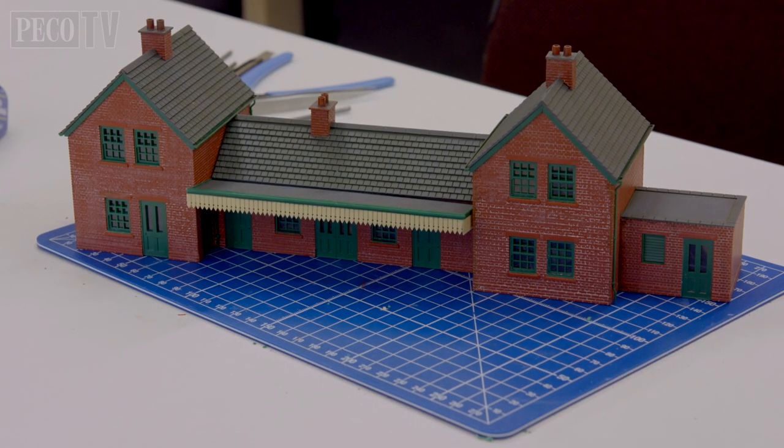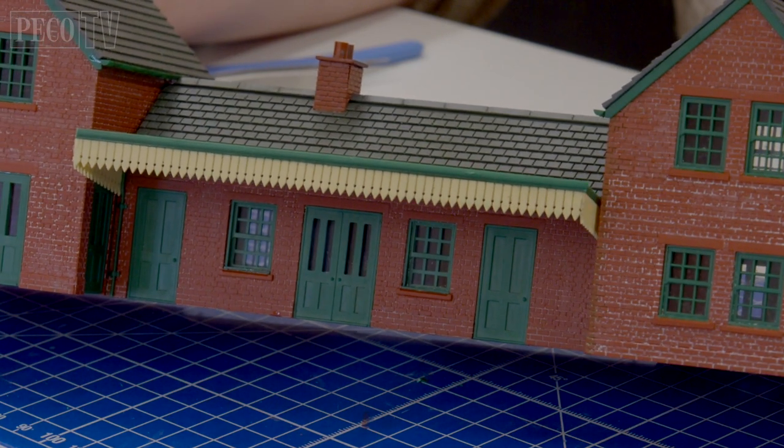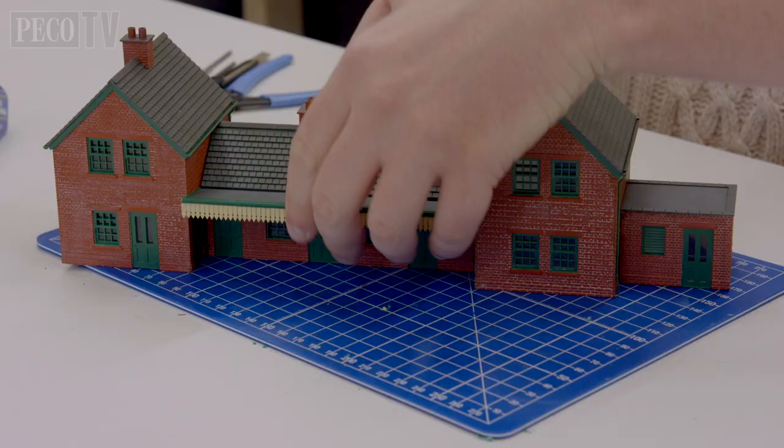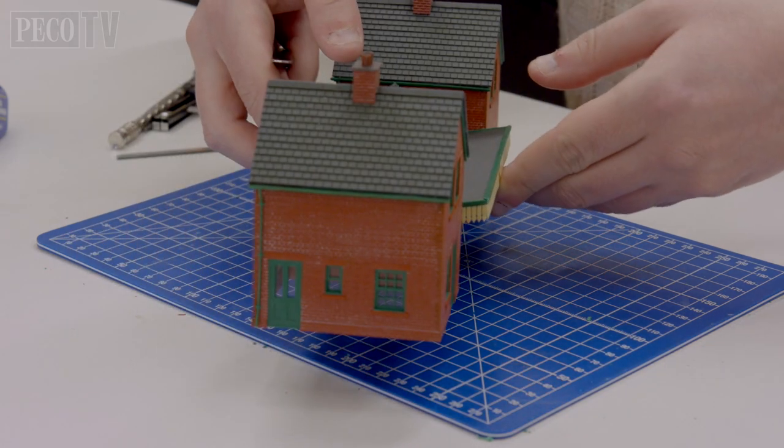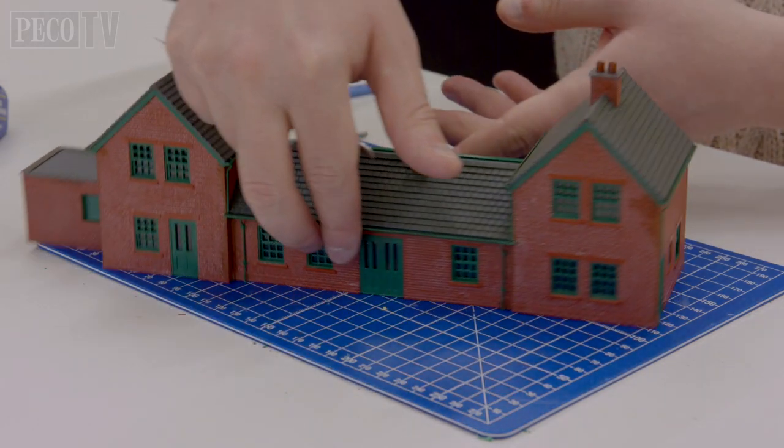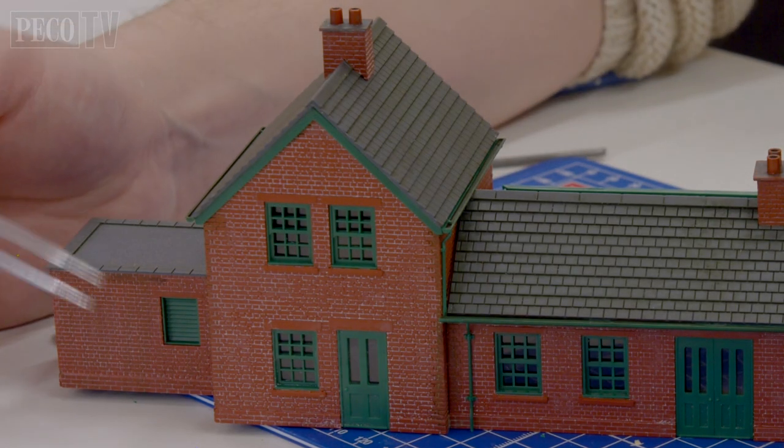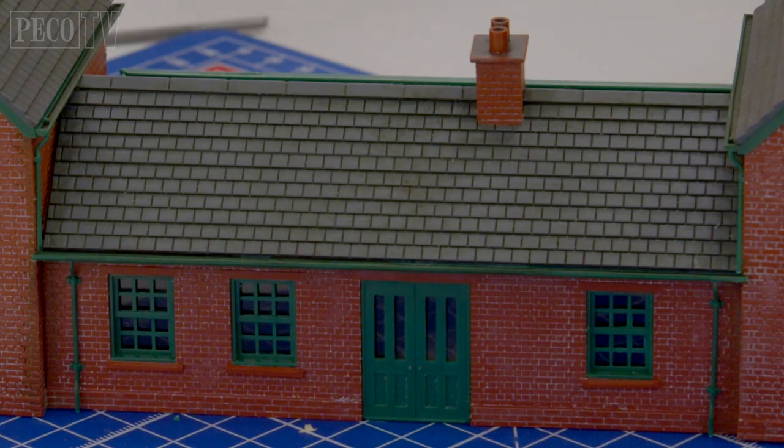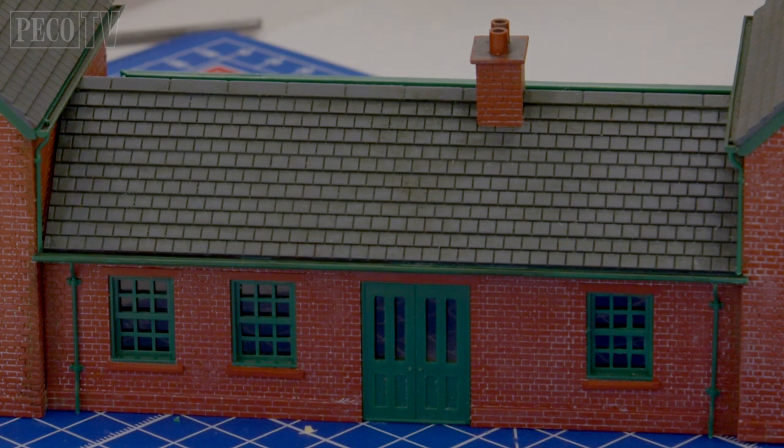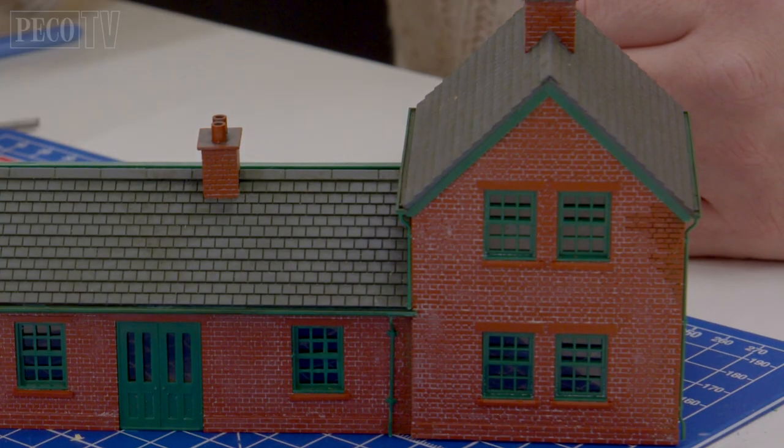And there you have it. A finished building ready for your layout. You can make all manner of alterations and colour schemes. Heavier or lighter weathering to meet your desired look and requirements for your layout. Even change the building's configuration or combine multiple kits to build an even bigger building. The sky is the limit.